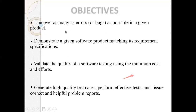The objectives are to uncover as many errors as possible in a given product — we will discover the maximum errors and bugs in our software products and remove them. We demonstrate that a given software product matches its requirements specification. We will validate the quality of software testing using minimum cost and effort. We generate high quality test cases, perform effective tests, and report correct and helpful problems.